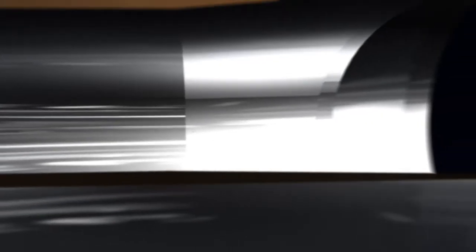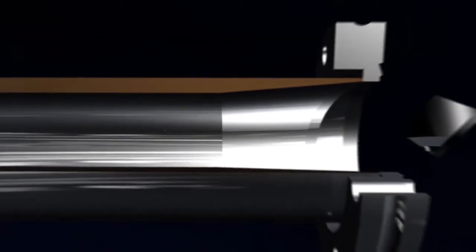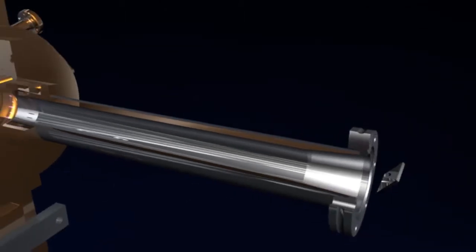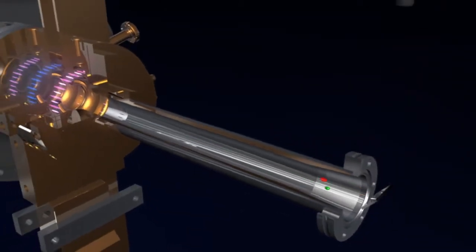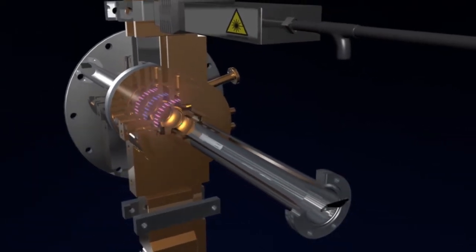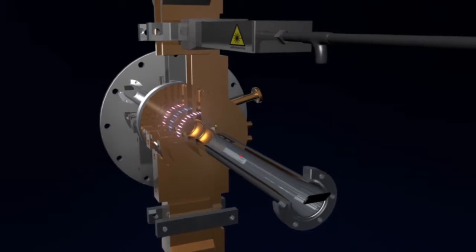The compact electron source is the heart of the SwissFEL facility. The Paul Scherer Institute has refined it to enable the electrons to be generated and accelerated optimally. Therefore, it's possible to build the entire X-ray laser in a comparatively compact and cost-effective way.